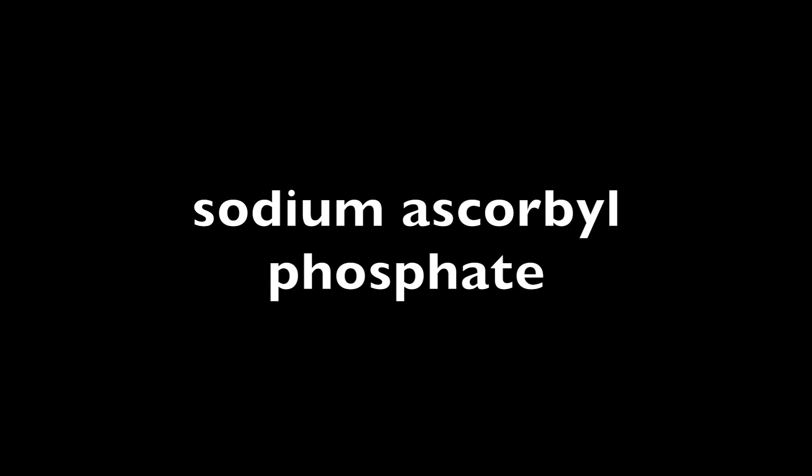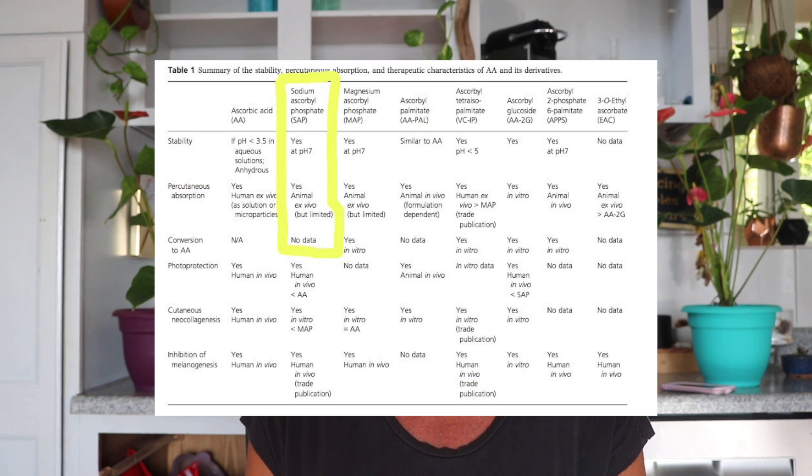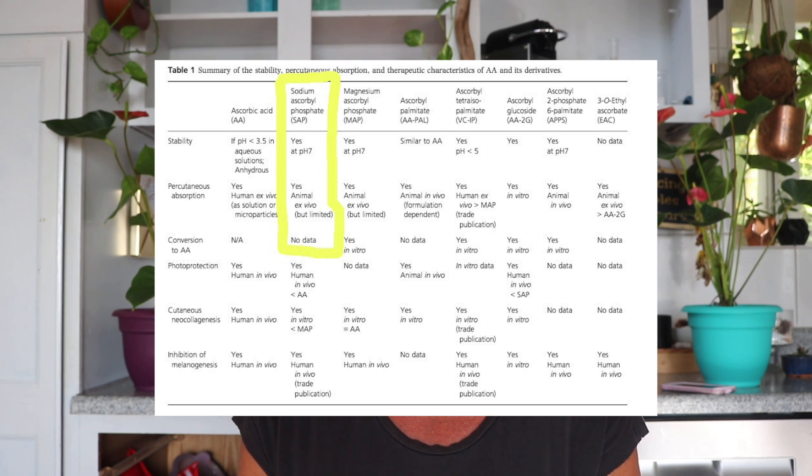The next water-soluble derivative — stability: yes at a pH of seven. Percutaneous absorption: yes in animals, but limited. Conversion to ascorbic acid: no data. Green beauty products containing this ingredient include the Mad Hippie Vitamin C Serum, the Orgaid sheet masks, and the Agent Nateur Holi C Powder.